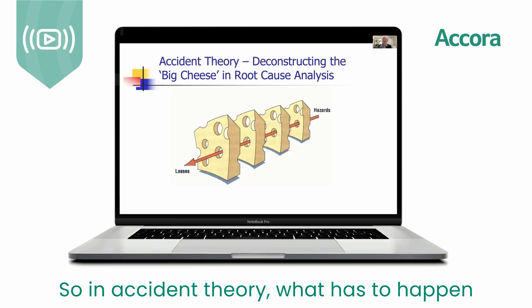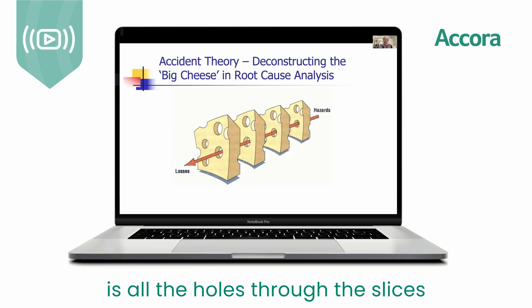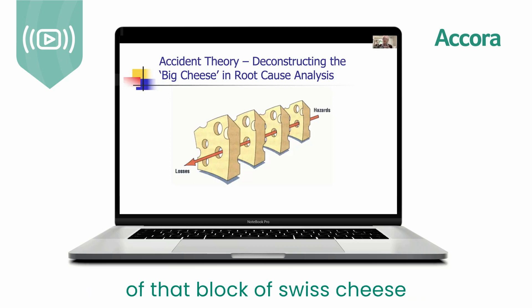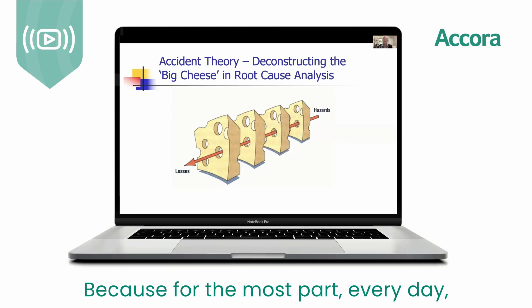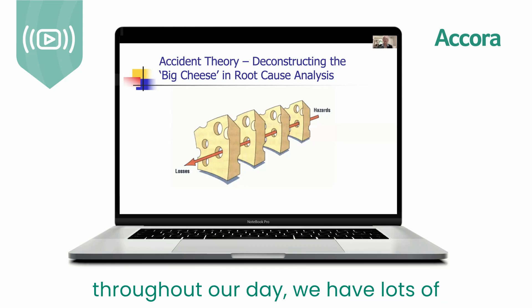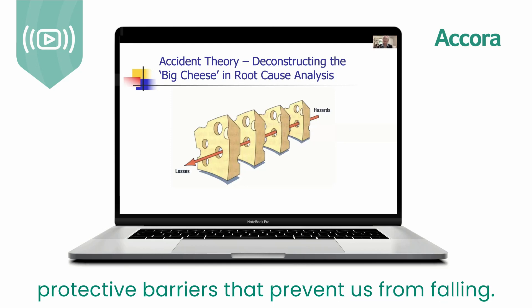So in accident theory, what has to happen is all the holes through the slices of that block of Swiss cheese have to align for an accident to occur. Because for the most part, every day throughout our day, we have lots of protective barriers that prevent us from falling.